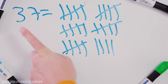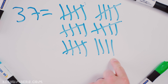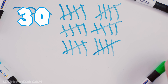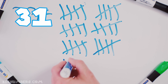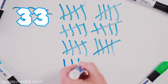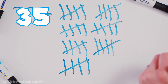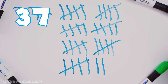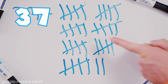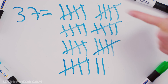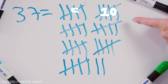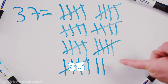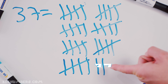Let's do 37. Right now we have 29, so we need to cap this off and make it 30, and then add 7 more: 31, 32, 33, 34, 35, and then add 2 more. That's 37! 5, 10, 15, 20, 25, 30, 35, and 2 more make 37.